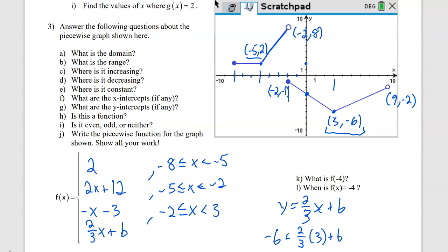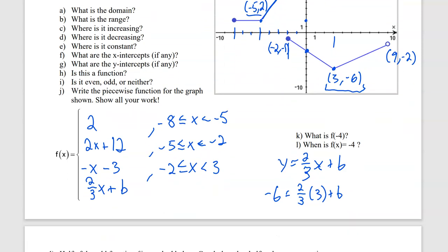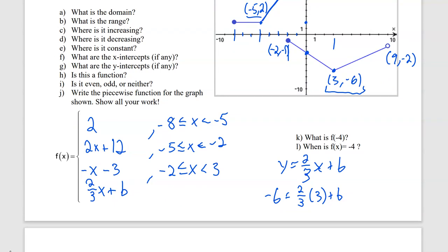And so I'm just going to do a little bit of math on this. And so we'll go ahead and multiply 2 thirds times 3, that's just 2. So 2 plus b is equal to negative 6. And then if we subtract 2 from both sides, we get that b is equal to negative 8. And so we can go ahead and replace this b over here with negative 8. So it'd be instead of plus b, write minus 8.